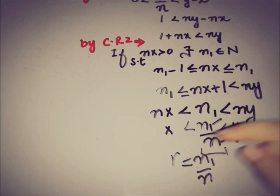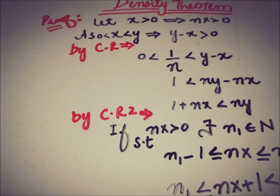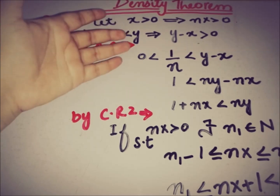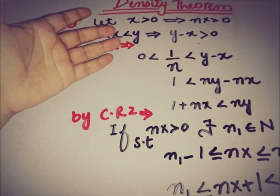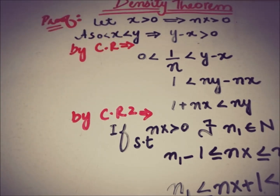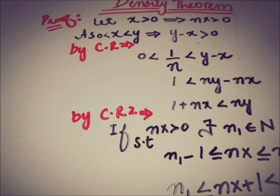So this is the rational number r that lies between x and y. We proved the density theorem using two corollaries from the Archimedean property, the relation of any arbitrary number to the natural numbers, the generality of taking x as positive, and the given information that between any two real numbers there must exist a rational number.